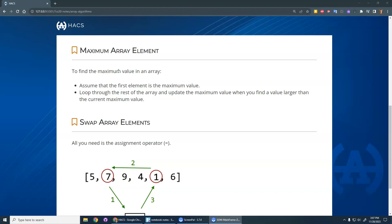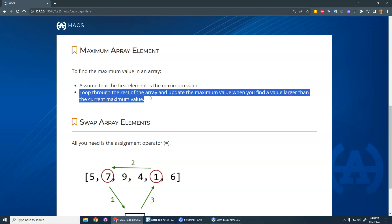To do this, a good way to do this is to assume that the first element is the maximum value. So you say, let's just say the first value is the highest value. And then we can loop through the rest of the array and compare it to what we have currently saved as our maximum value. In this case, the first element.